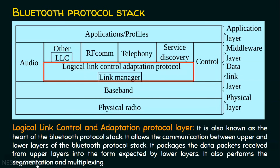L2CAP also performs segmentation and multiplexing. From the upper layer we receive data, and these data have to be converted into the form which the lower layers can understand — this conversion is taken care of by the logical link control adaptation layer. Segmentation means that if big data is generated by the application layer, it cannot be sent in a single stretch. Since Bluetooth suffers from a lower data rate, it has to be broken into pieces called segments. When the channel is used by many nodes at the same time, multiplexing is also handled by this layer.